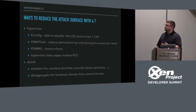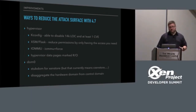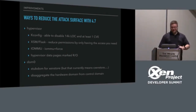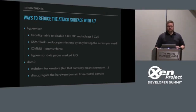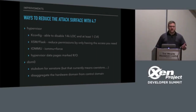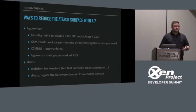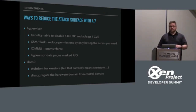Where are we today with Xen 4.7? We've got kconfig. The hypervisor is about 275,000 lines of code. With the 4.7 release, you're able to turn off 14,000 lines of code. At least one of the CVEs that I found would have been closed had you turned all those switches off.